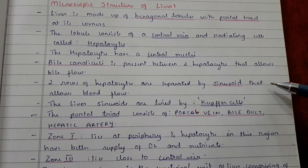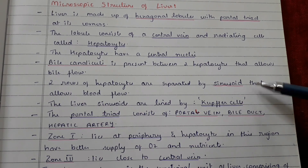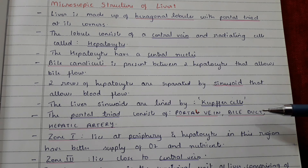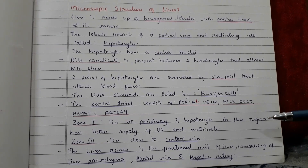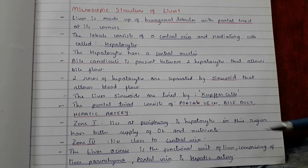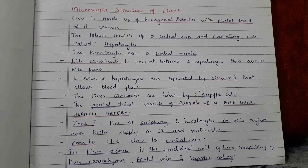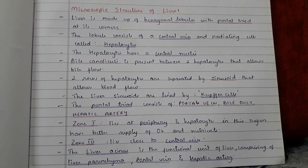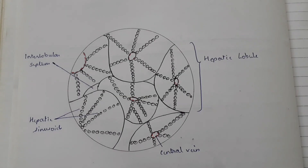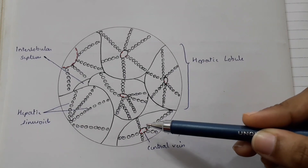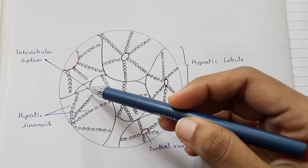Two rows of hepatocytes are separated by sinusoids that allow blood flow. The liver sinusoids are lined by Kupffer cells. The portal triad consists of the portal vein, bile duct, and hepatic artery. Zone 1 lies at the periphery and hepatocytes there have a better supply of oxygen and nutrients; Zone 3 lies close to the central vein. The liver acinus is the functional unit of the liver, comprising liver parenchyma, portal vein, and hepatic artery. The microscopic structure shows the hepatic lobule, central vein, hepatic sinusoid, and interlobular septum.